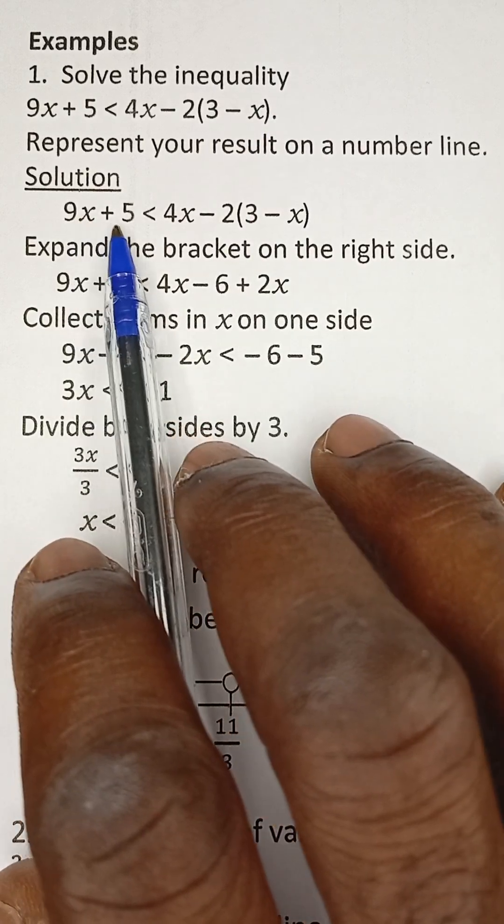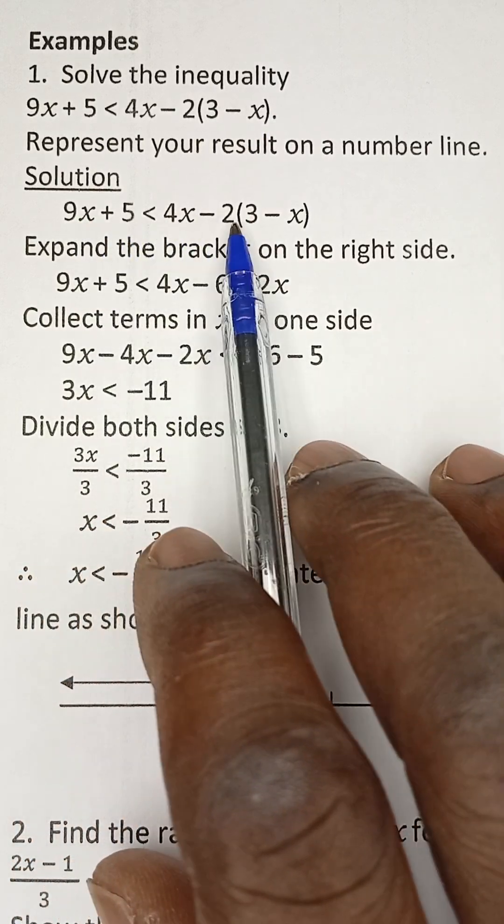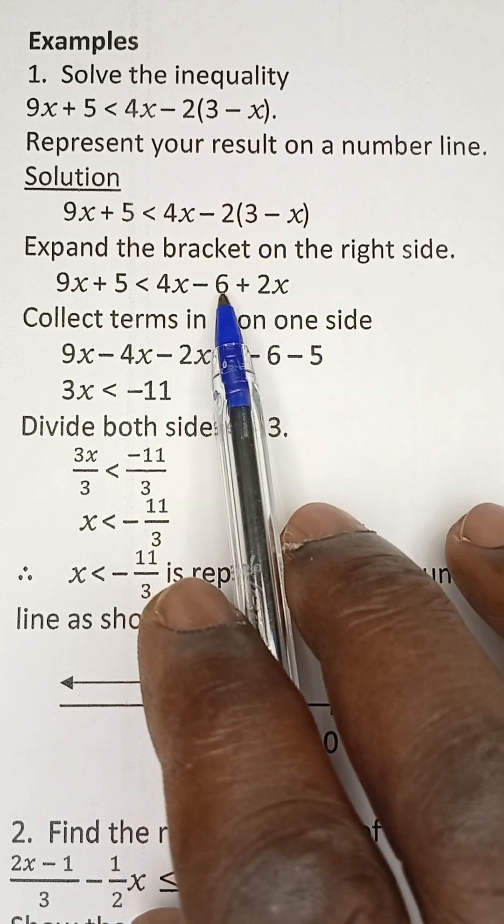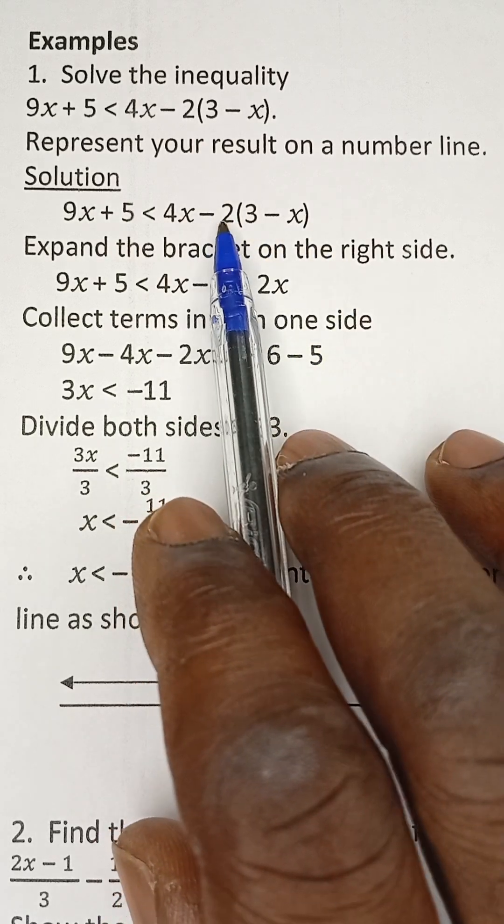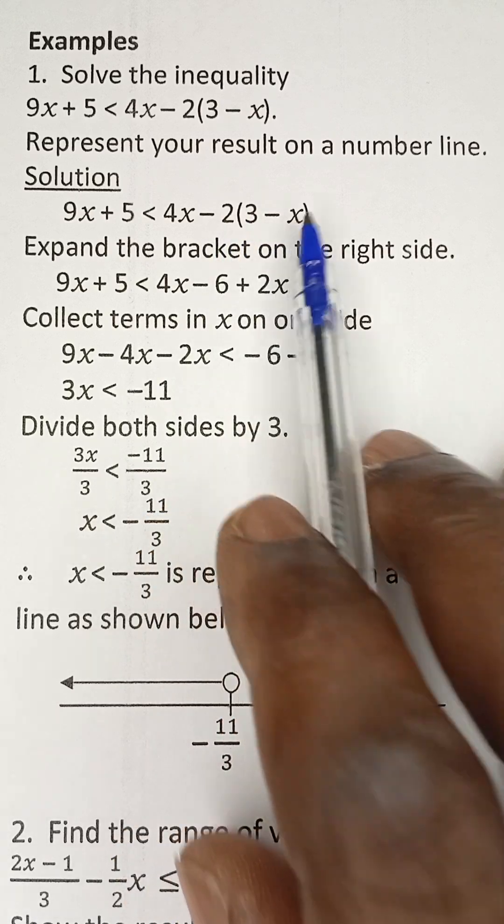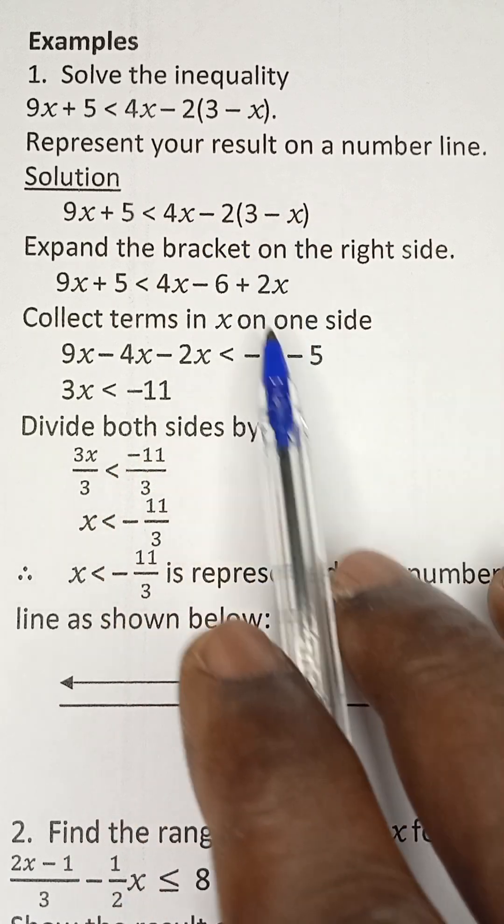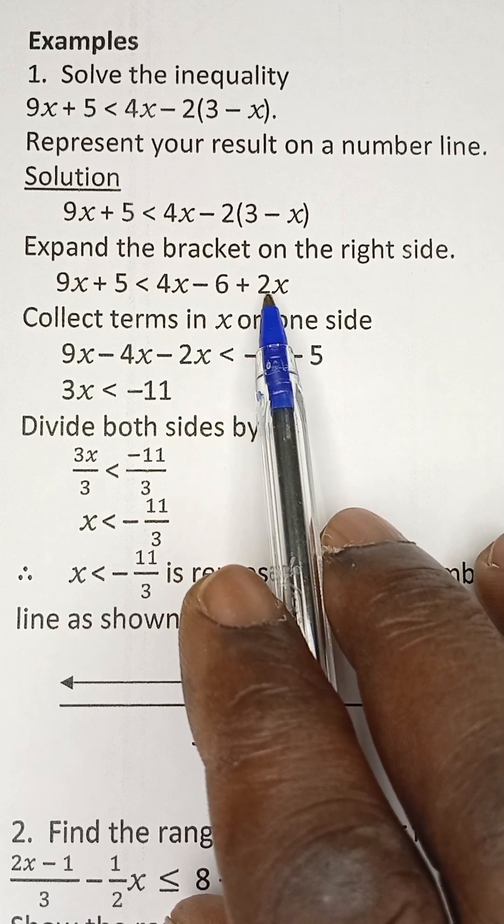So that will give us 9x plus 5 is less than or equal to 4x. Negative 2 multiplied by 3 gives us negative 6. And then negative 2 multiplied by negative x gives us positive 2x. Don't forget negative multiplied by negative becomes positive, positive 2x.